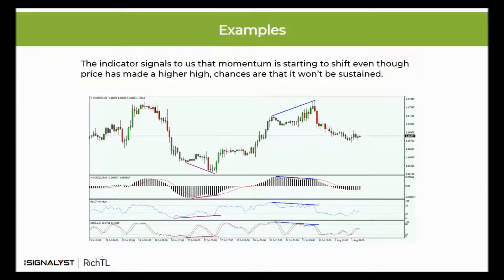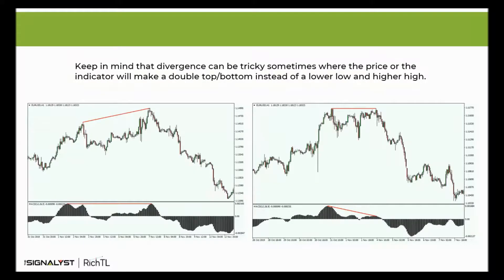That's exactly what the indicator is telling you — even though price is going up, the momentum is getting weaker, and vice versa in case of a regular bullish divergence. Keep in mind the divergence can be tricky sometimes, where the price or the indicator will make a double top or bottom instead of a lower low and higher high. For example, price made a higher high while MACD made equal highs instead of a lower high, or MACD made a lower high while price made equal highs instead of a higher high. These types aren't as strong as the classic divergence but are still considered divergences.